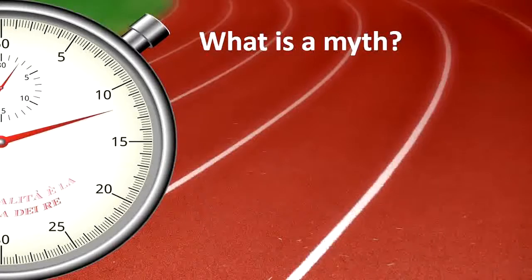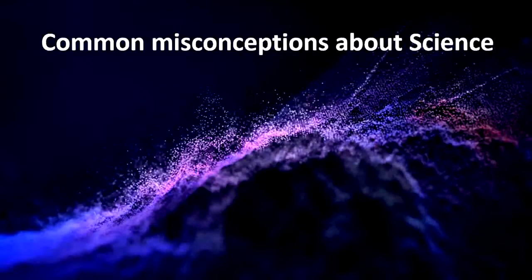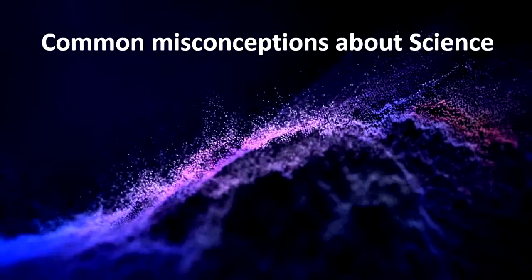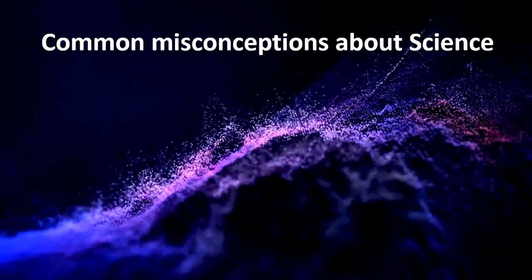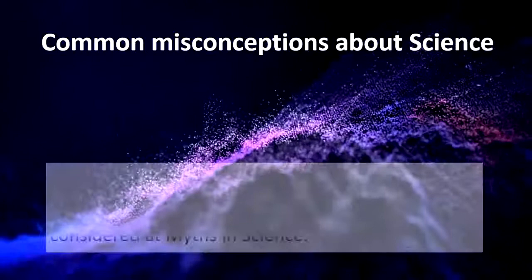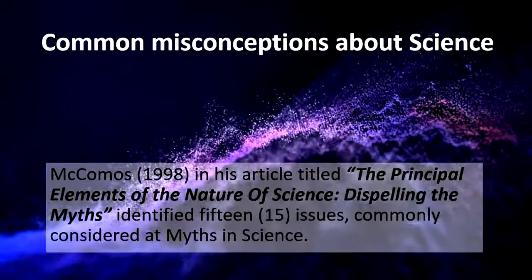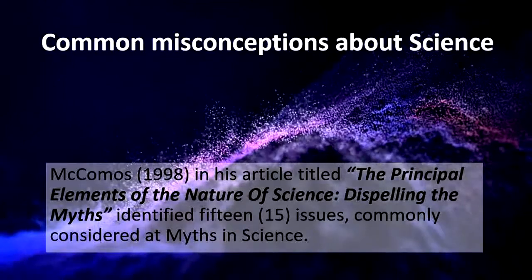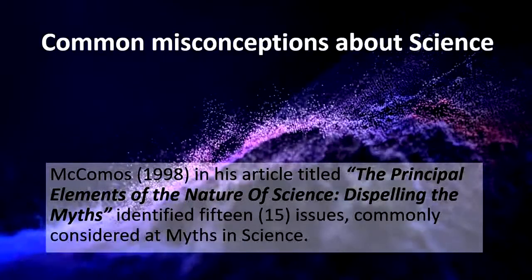When we try to conclude what is a myth, we basically reach a conclusion that if over a long period of time something imaginary exists without verification, it becomes a common belief and we call it myth if it is untrue. When we talk about science, we should also think about why some myths or misconceptions are associated with science. McComas in his 1998 article entitled 'The Principal Elements of Nature of Science: Dispelling the Myths' identified 15 issues which are commonly considered as myths in science. In this discussion, I am going to talk about all these 15 issues one by one.